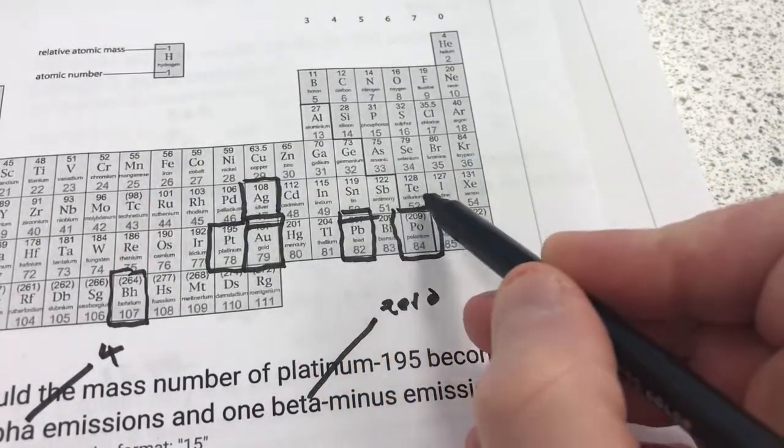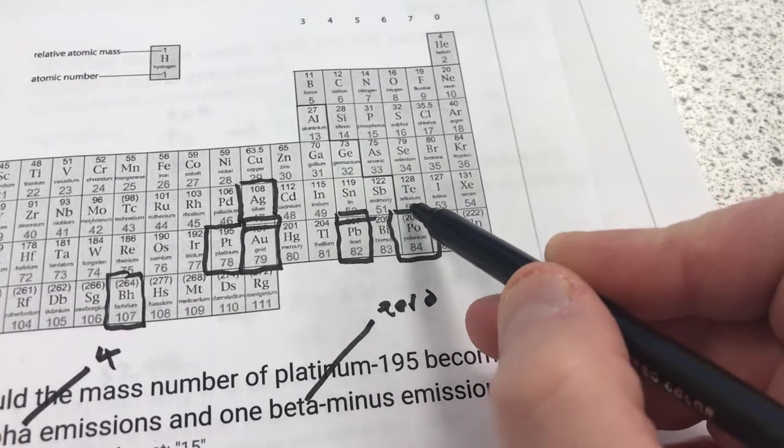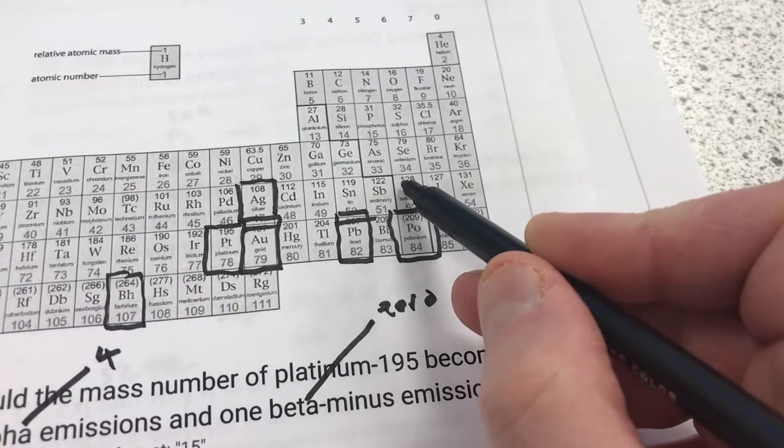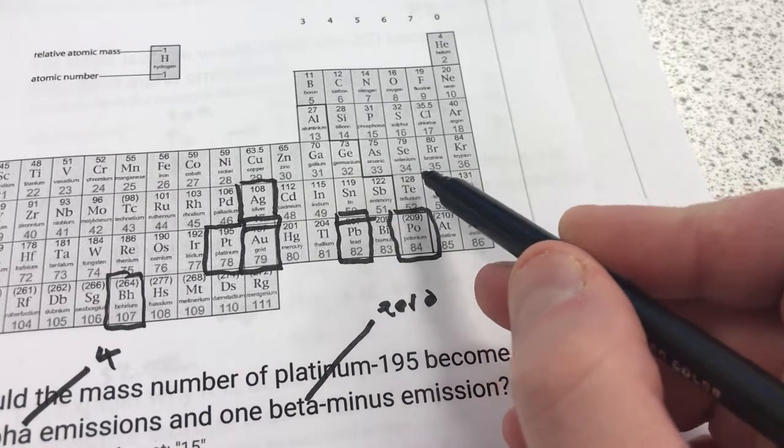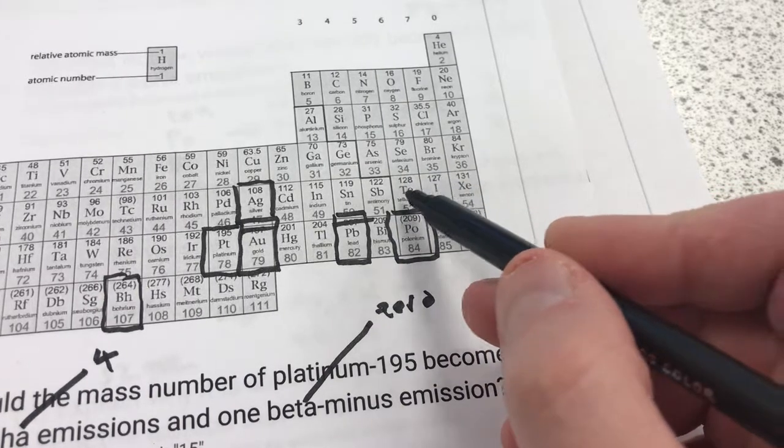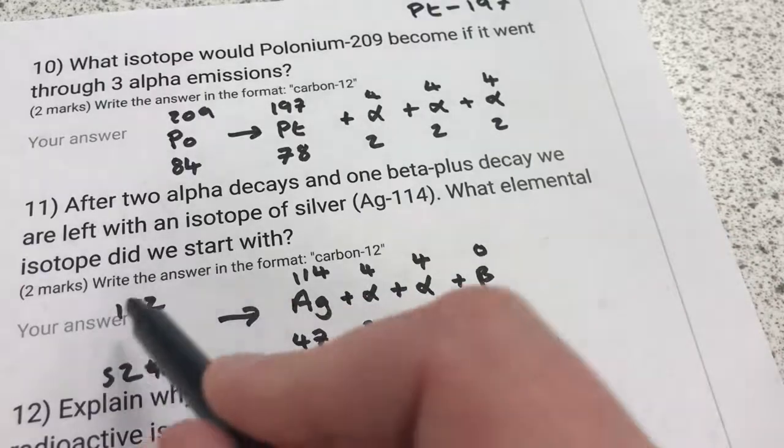Which is Tellurium, Tellurium 52. Tellurium normally has an atomic mass of 128, but the atomic isotope that I have is Tellurium 122.